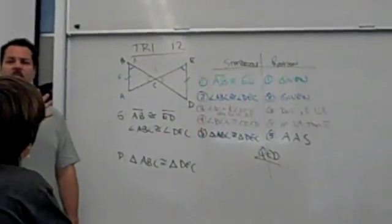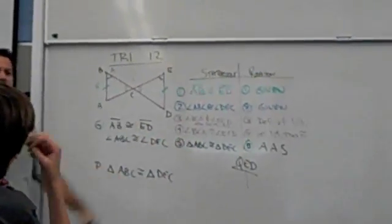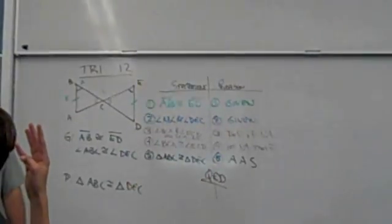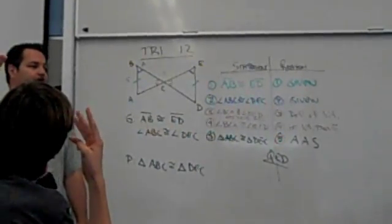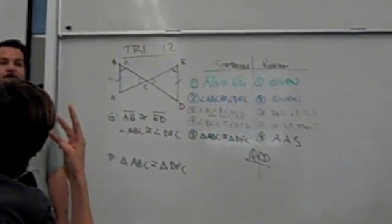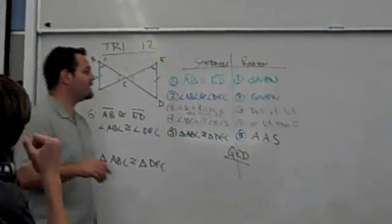Five, I totally see how that works. Four, one little piece in there might have thrown me, but otherwise I get this pretty clearly. Three, I couldn't do this myself, but I follow your logic. Two, I'm having troubles. One, I don't do this proof thing at all. Okay, good. I'm freezing up. Hands down.